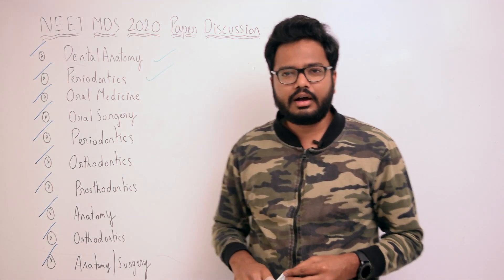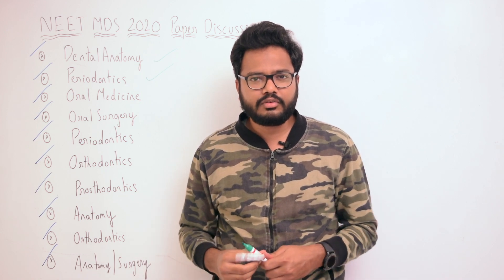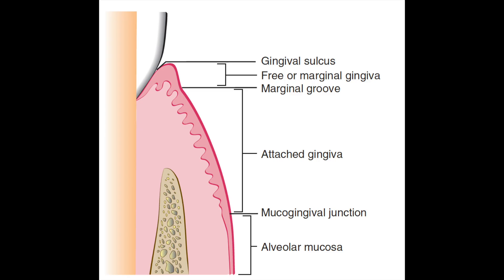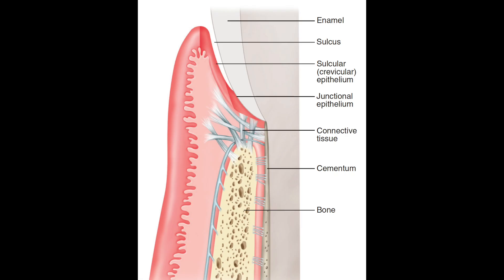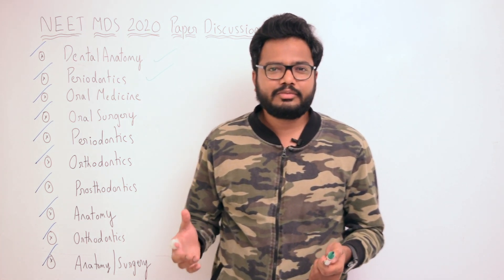The next image-based question from periodontics asks you to identify the normal structures of the periodontium in longitudinal section. As you can see, we have the gingival sulcus, free or marginal gingival, marginal groove, attached gingival, and also sulcular or crevicular epithelium, junctional epithelium, etc.